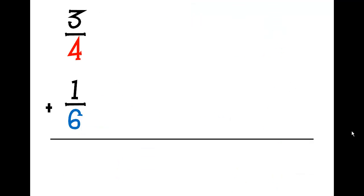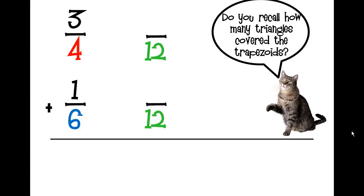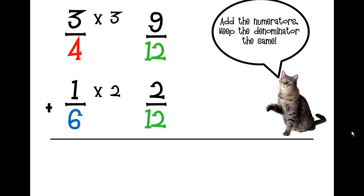I always tell my students to write their addition problems with fractions vertically. Remember, adding red and blue is like adding cats and dogs — you've got to get the common denominator. Here's how you get your new numerator: three triangles covered each trapezoid, so three times three is nine. On the blue diamond there were two, so one times two is two. Add the numerators and keep the denominator the same: nine plus two is eleven. So the answer is eleven-twelfths.